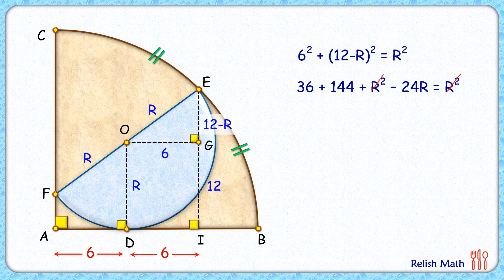Simplifying, we'll get 24R is 180. Taking 24 to the other side, we'll get R as 7.5 centimeters.